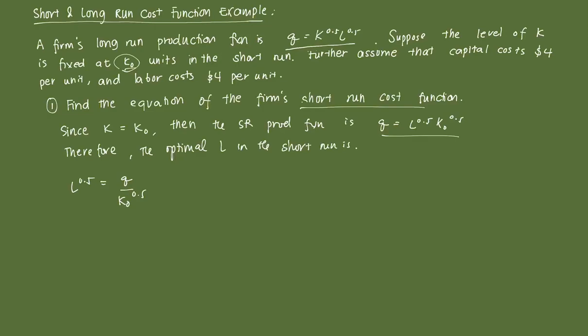We want to isolate L so we can compute the optimal L. From the production function, L^0.5 = Q / K0^0.5. Let's square both sides. So our optimal amount of labor employed — L prime — is just Q² / K0.